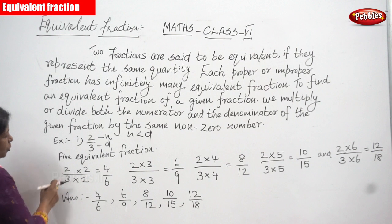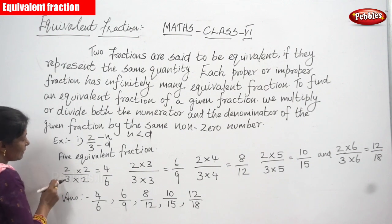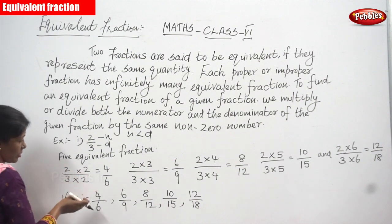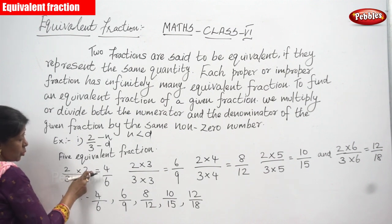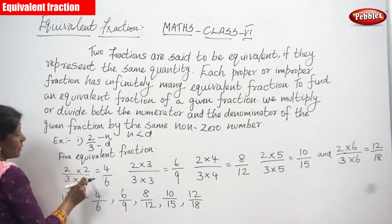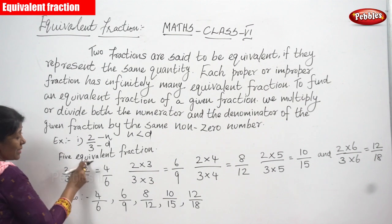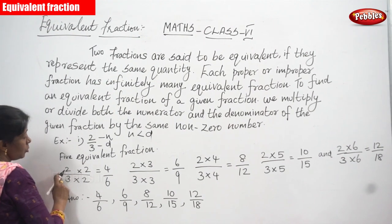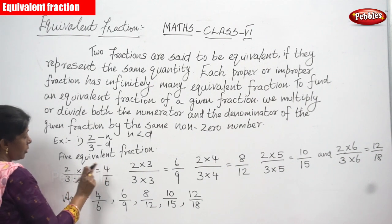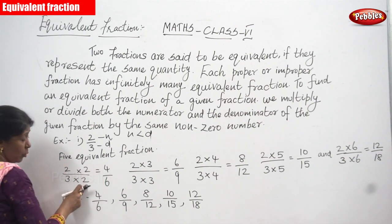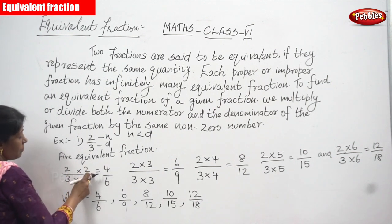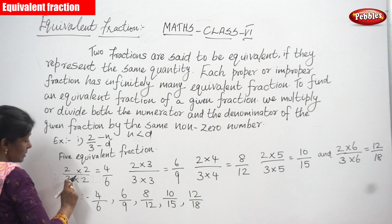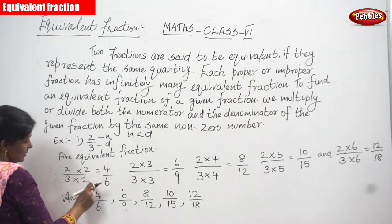Let us start the sum. The first one is 2 by 3. If you want to convert this proper fraction into an equivalent fraction, I have taken the number 2. So I am going to multiply both the numerator and the denominator by 2. So 2 into 2 gives 4 and 3 into 2 gives 6. Therefore 4 by 6 is an equivalent fraction of 2 by 3.